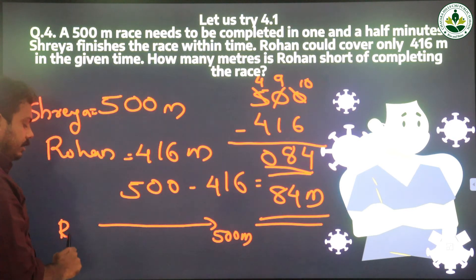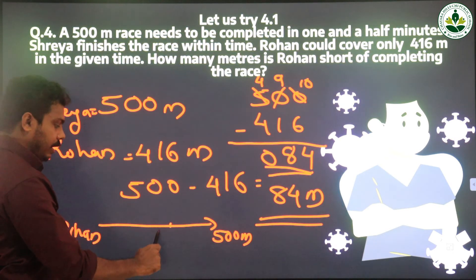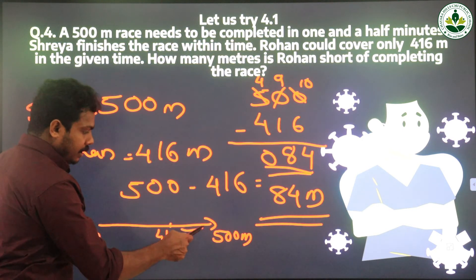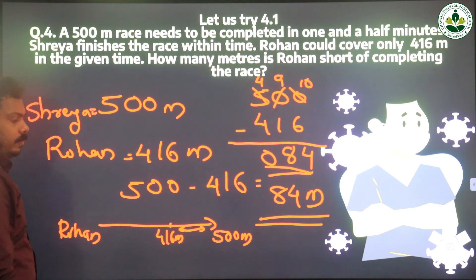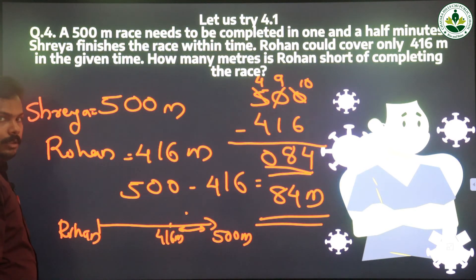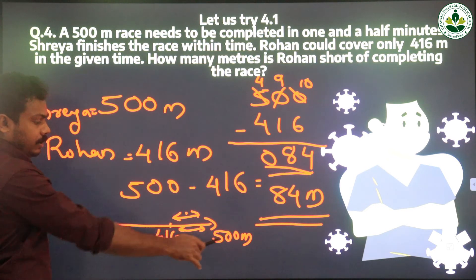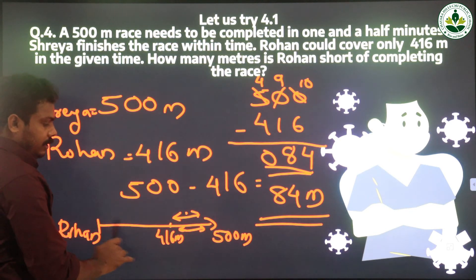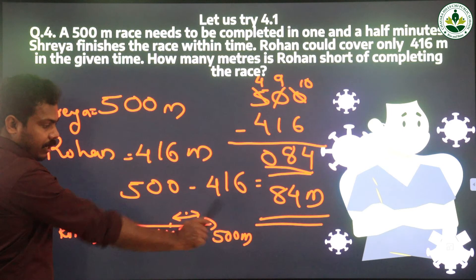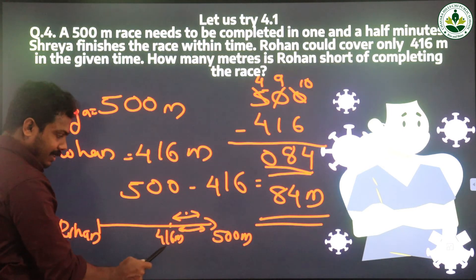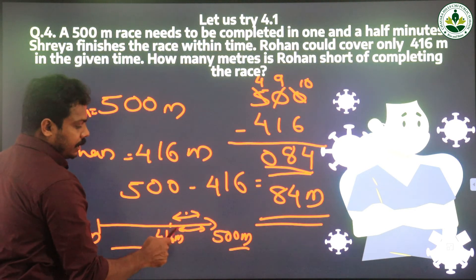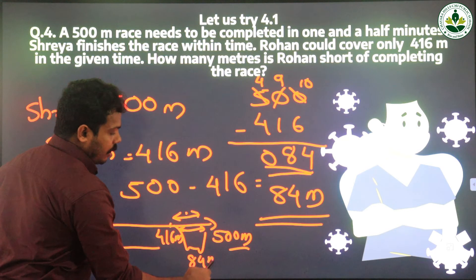Rohan needs to complete 500 meters, but he is now at 416 meters — he needs to complete the remaining distance. The total distance is 500 meters; he is at 416 meters. We subtract the completed distance from the total. That gives us the remaining distance: 84 meters.